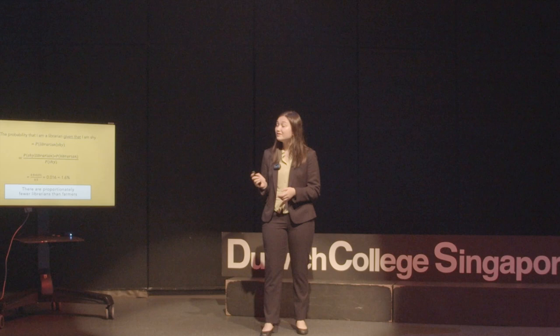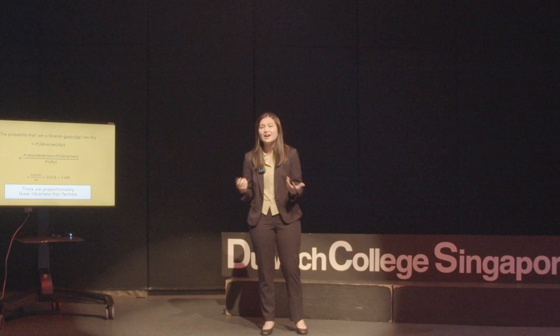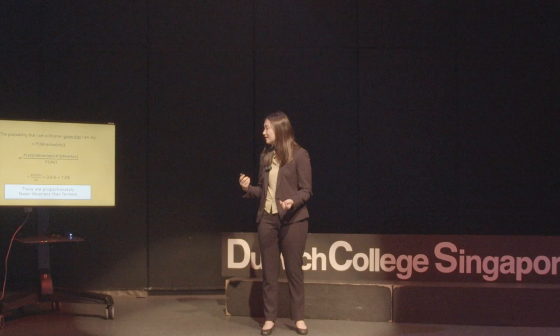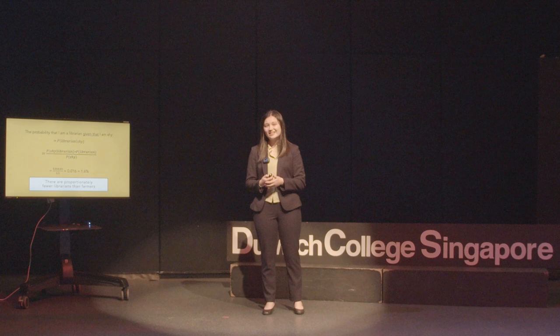What this works out to is actually 1.6%, which is way smaller than you would have imagined. This is because there are proportionately much fewer librarians than there are farmers. So even if 90% of librarians fit the description I gave you, it would still be more likely to apply to a farmer because there's simply more of them.